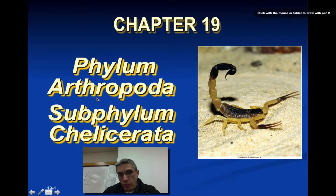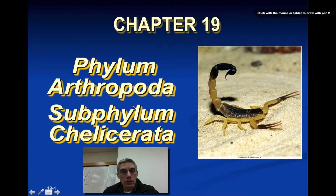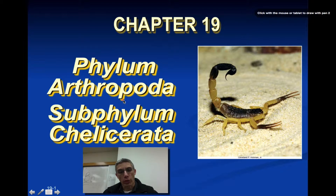For today's screencast, we're going to focus on a particular subphylum of the phylum Arthropoda, and that's going to be Chelicerata. The chelicerates actually include scorpions, spiders, ticks, mites, and a very ancient type of chelicerate called the horseshoe crab. That horseshoe crab will be the very first animal you look at once you make your way into lab.